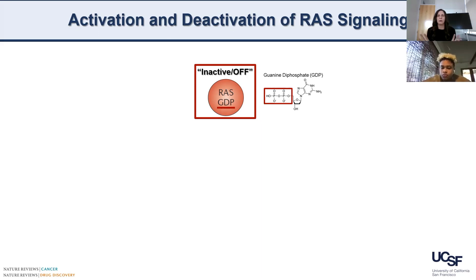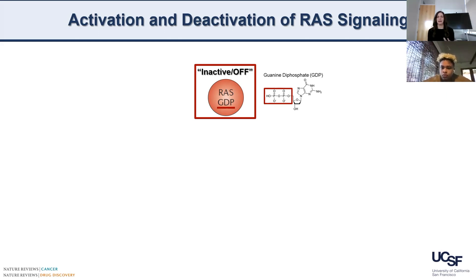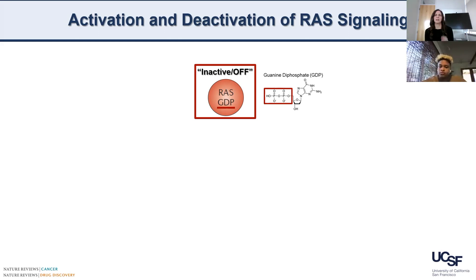So without going into much detail, just in a broad sense, when this RAS molecule is bound to this other molecule called GTP, which is similar to what you may have heard in class about ATP, which is the energy you get to go run or swim or jump over a hoop or something - that's kind of very similar. It just has a different nucleotide.